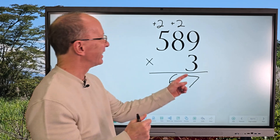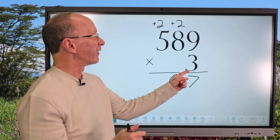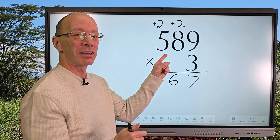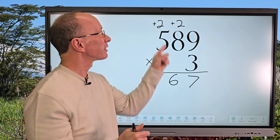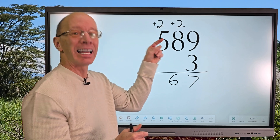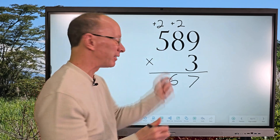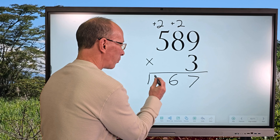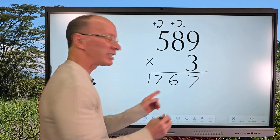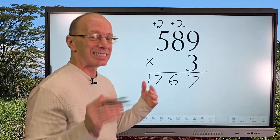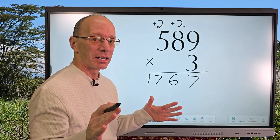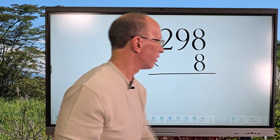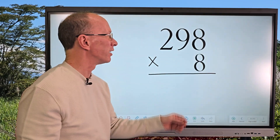And now three times five equals fifteen, plus two more is seventeen. So our answer is one thousand seven hundred sixty-seven. Let's do one more!